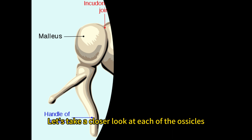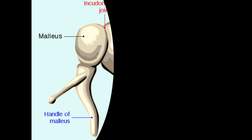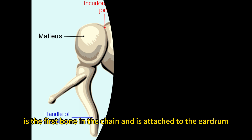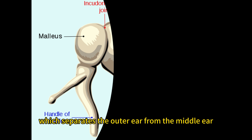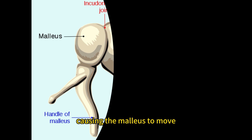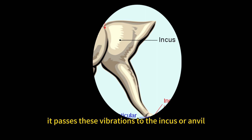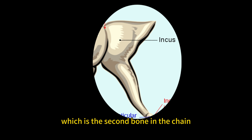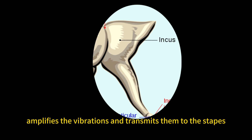Let's take a closer look at each of the ossicles. The malleus, also known as the hammer, is the first bone in the chain and is attached to the eardrum, which separates the outer ear from the middle ear. When sound waves hit the eardrum, it vibrates, causing the malleus to move. When the malleus vibrates, it passes these vibrations to the incus, or anvil, which is the second bone in the chain. The incus, in turn, amplifies the vibrations and transmits them to the stapes.